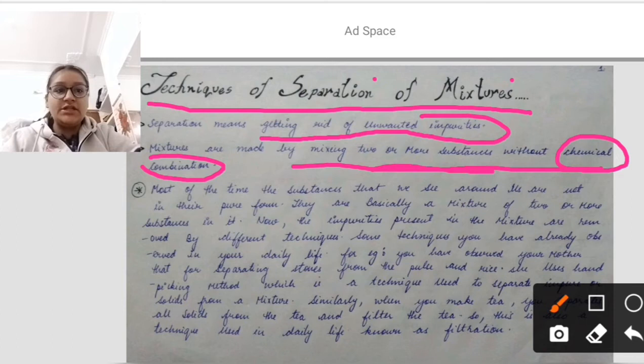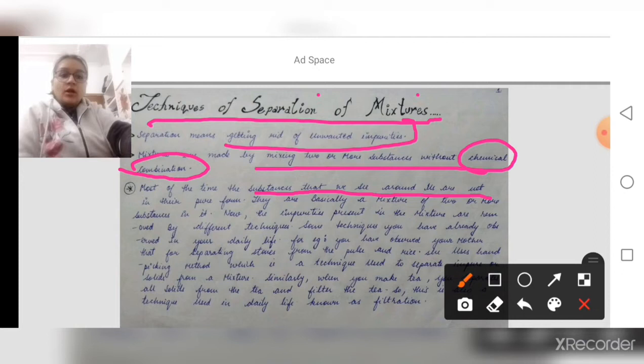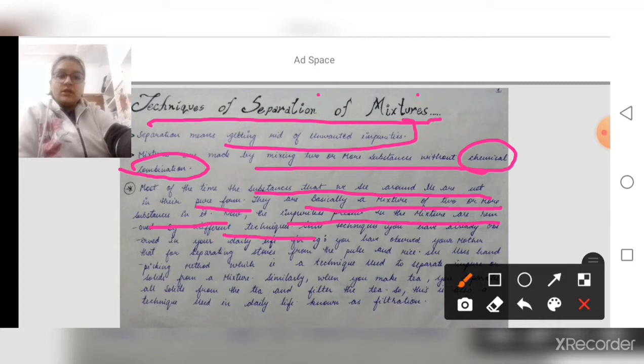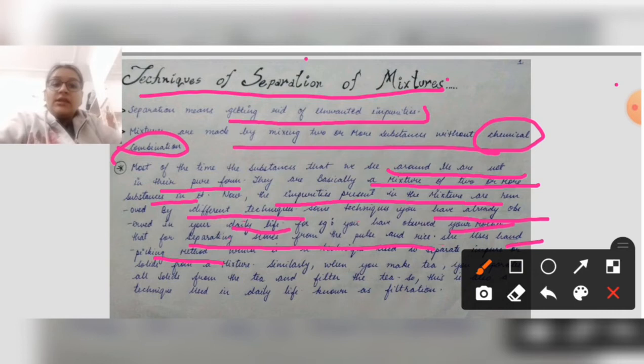Now I will give you a little more detail about this topic before we study the techniques of separation of mixture. Most of the time, the substances that we see around us are not in their pure form — they are basically a mixture of two or more substances. The impurities present in the mixture are removed by different techniques, some of which you have already observed in daily life. For example, you have observed your mother separating stones from rice. She uses the hand picking method, which is a technique used to separate solids from a mixture.